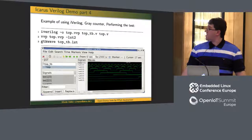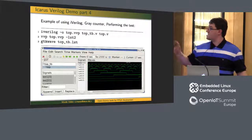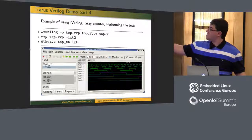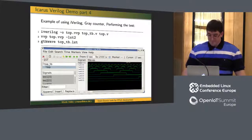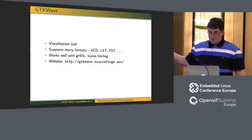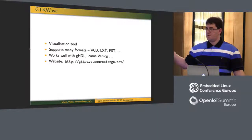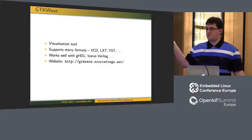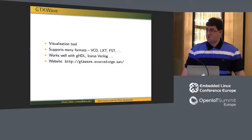Finally, I visualize the output — the top_tb.lxt — using GTK Wave. This is the output you get: you can see on the right side the LEDs and how they are counting. That's the gray counter example. GTK Wave is a visualization tool that supports multiple formats — whatever comes out of Icarus or GHDL can be loaded into GTK Wave and it will display that.